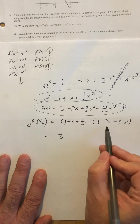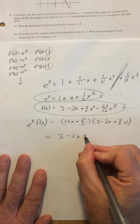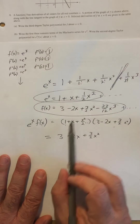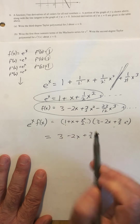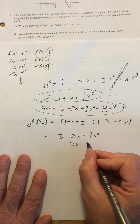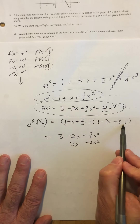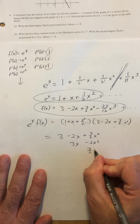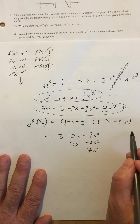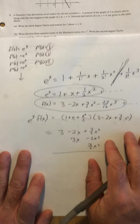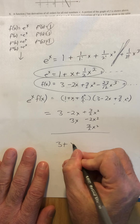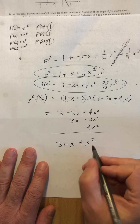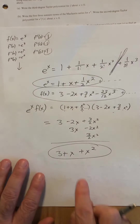Starting to distribute: one times three is three; one times negative two x is negative two x; one times three halves x squared is three halves x squared. The next term would be cubic, so I stop there. Then x times three is three x; x times negative two x is negative two x squared — and x times three halves x squared would be cubic, so I skip that. Finally, one half x squared times three is three halves x squared, and the remaining products are all higher powers. Combining all six terms: three, plus x, plus six halves minus two gives just plus x squared. So the final answer for part B is three plus x plus x squared.